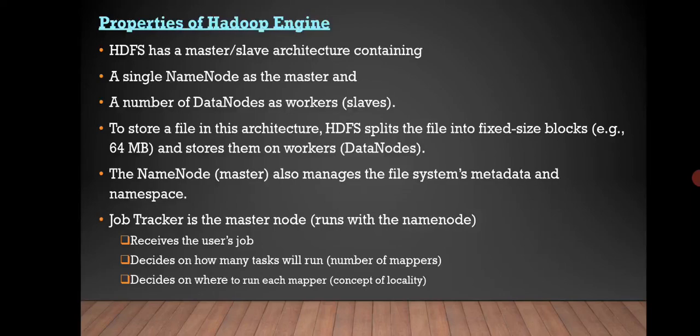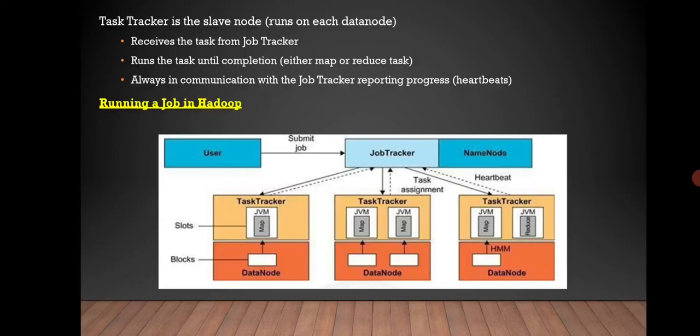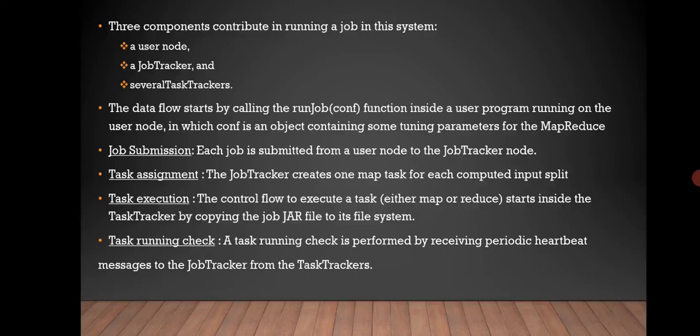To store a file, it splits and stores as workers. The name node also manages the file system metadata and namespace. Job tracker is the master node which receives the user's job, decides on how many tasks it will run, and decides where to run each map. The task tracker is a slave node. It receives the task from the job tracker, runs the task until completion, and is always in communication with the job tracker reporting progress. This is how a job runs in Hadoop, and these components contribute to running a job in the system: a user node, a job tracker, and several task trackers.